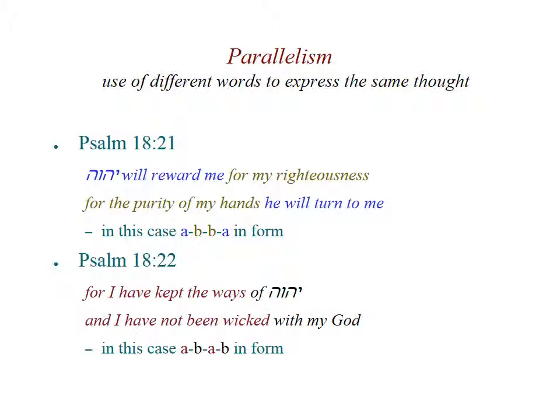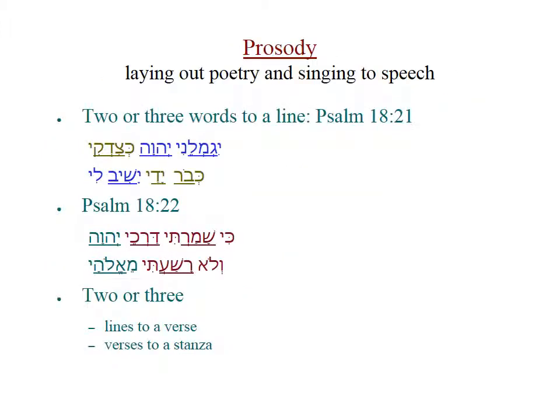On this slide, there are two examples from Psalm 18. First, verse 21: 'The Lord will reward me for my righteousness. With the purity of my hands, he will turn to me.' In this case, the form is ABBA, a form frequently called chiasm. In order to hear or see this in translation, the translator has to be very careful. You can see that these verses in Hebrew have the ABBA form and the ABAB form.